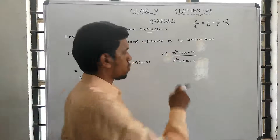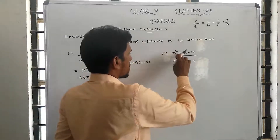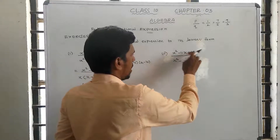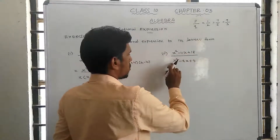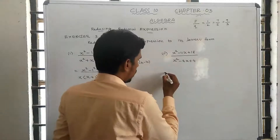This is solution 2: x squared minus 11x plus 18 divided by x squared minus 4x plus 4.